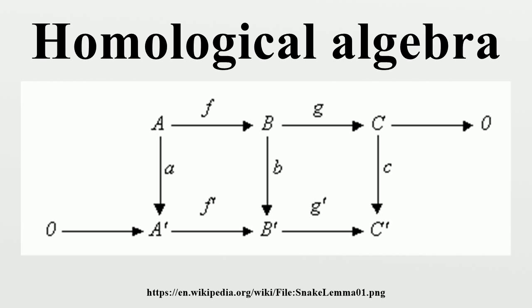K-theory is an independent discipline which draws upon methods of homological algebra, as does the non-commutative geometry of Alain Connes. Homological algebra began to be studied in its most basic form in the 1800s as a branch of topology, but it wasn't until the 1940s that it became an independent subject with the study of objects such as the Ext functor and the Tor functor, among others.